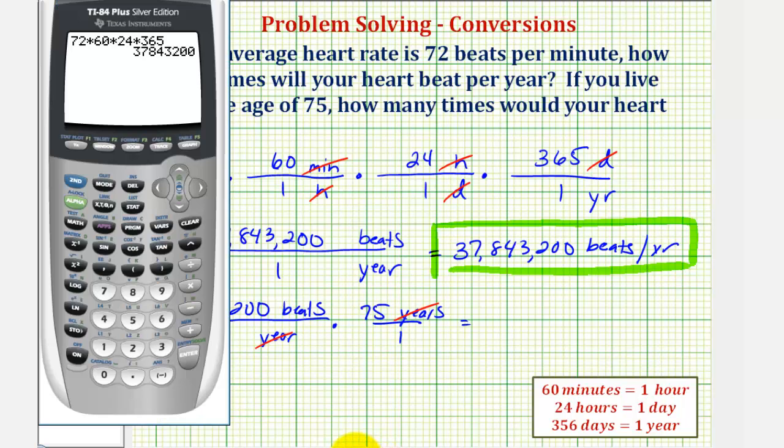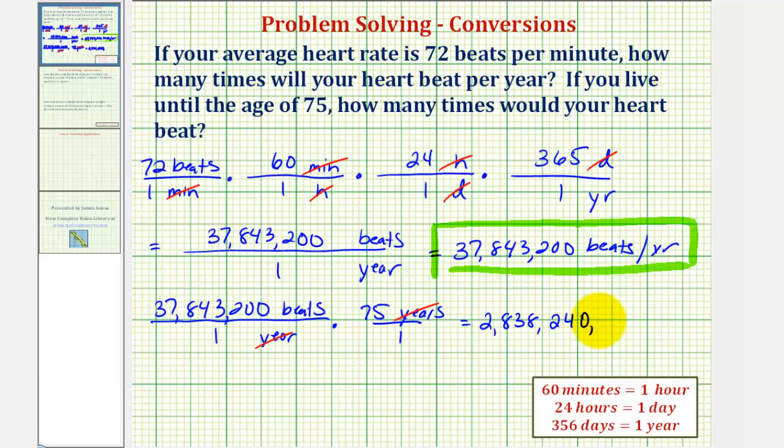So going back to the calculator, we'll multiply this result by 75, which gives us 2,838,240,000. Which once again is a number of beats over 75 years if someone's average heart rate is 72 beats per minute.